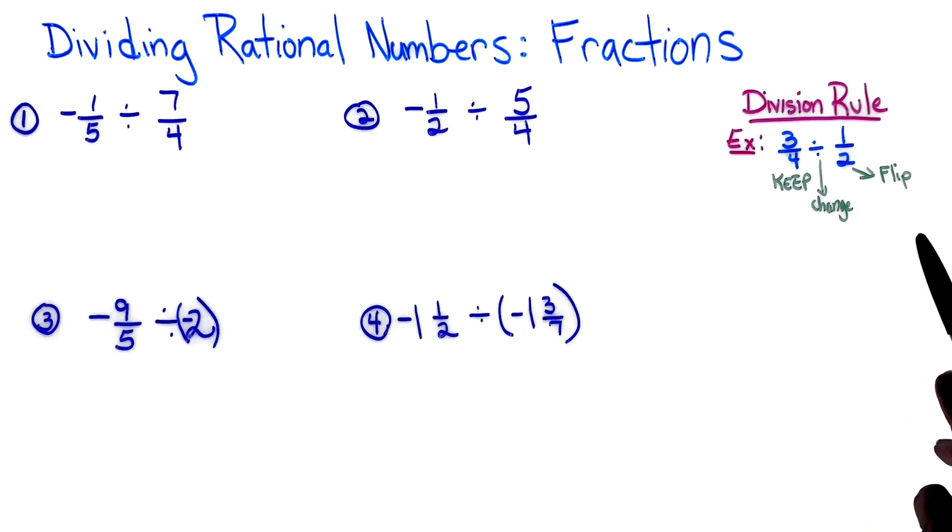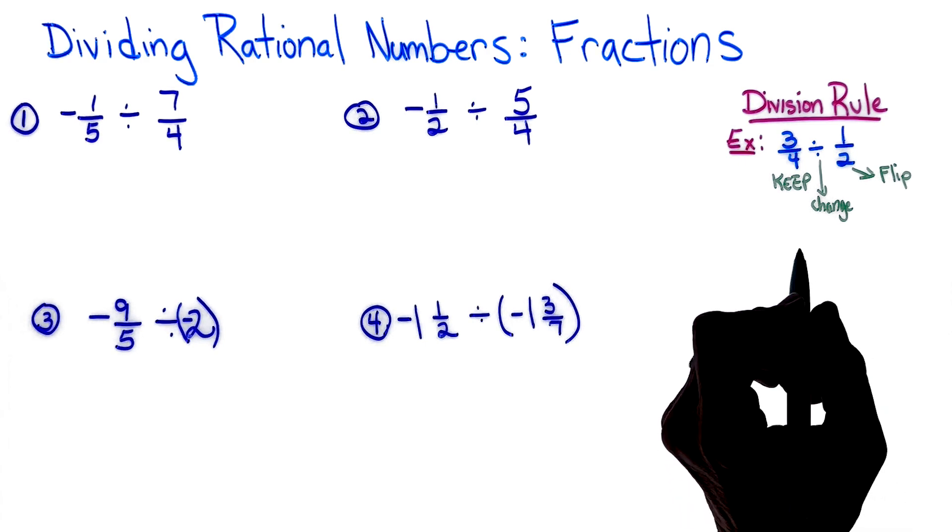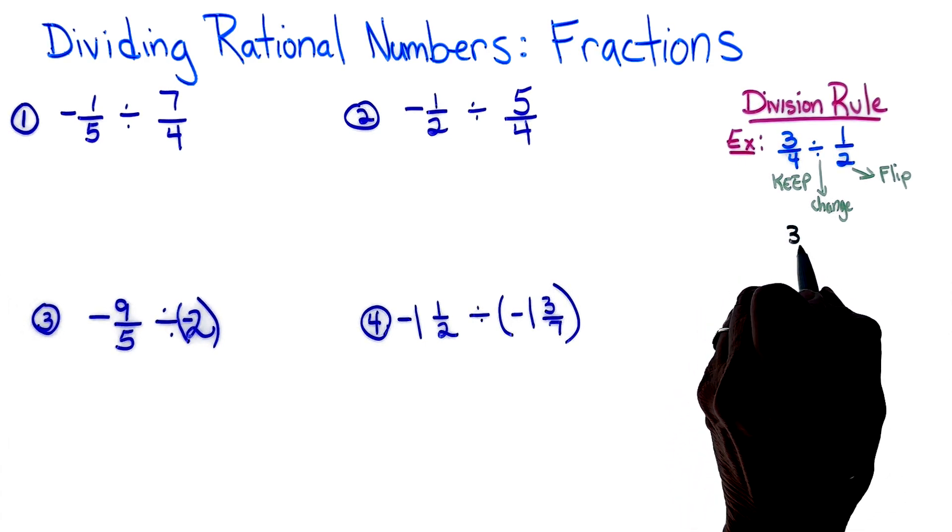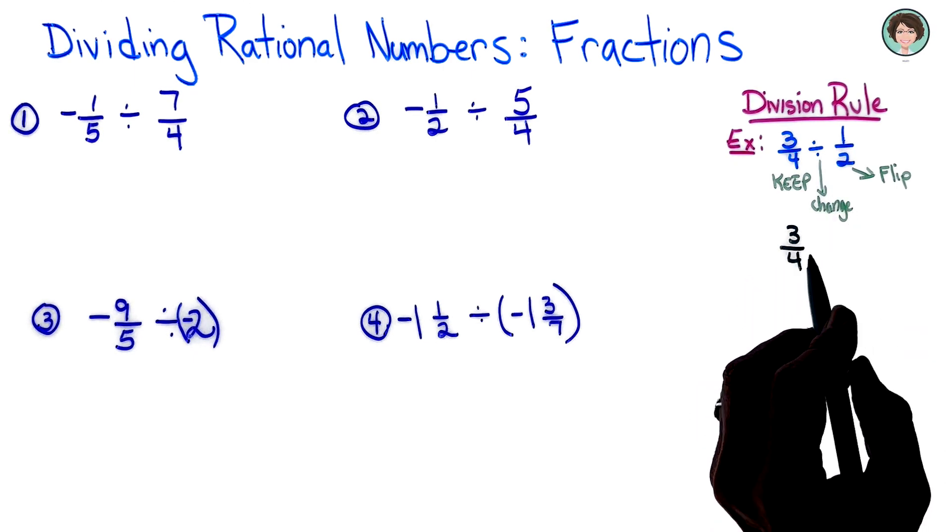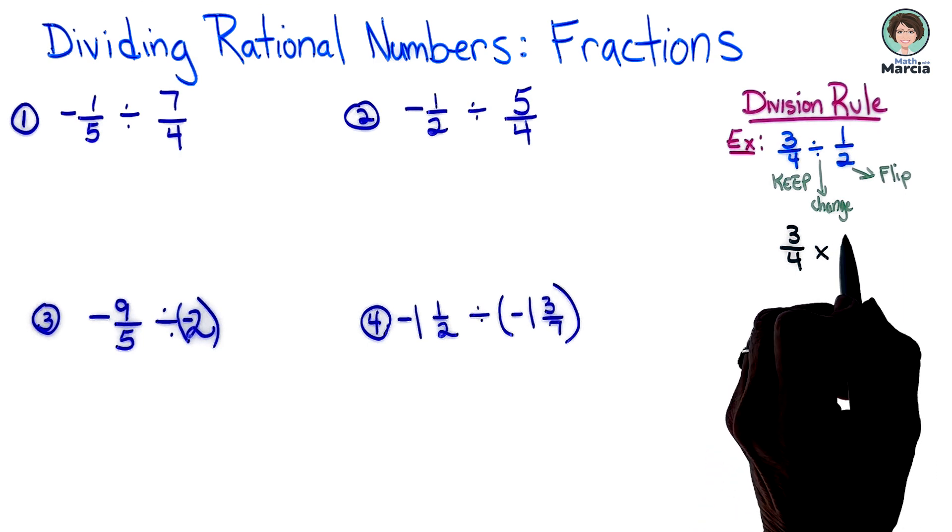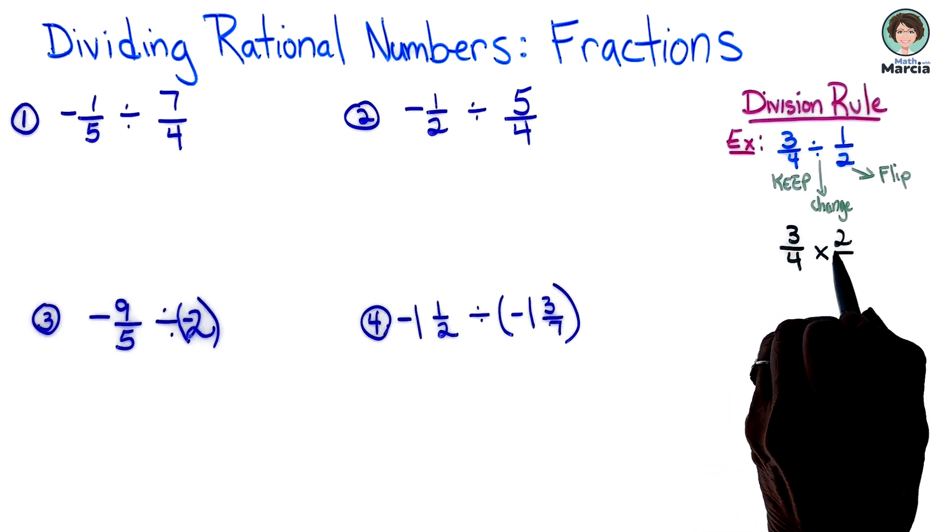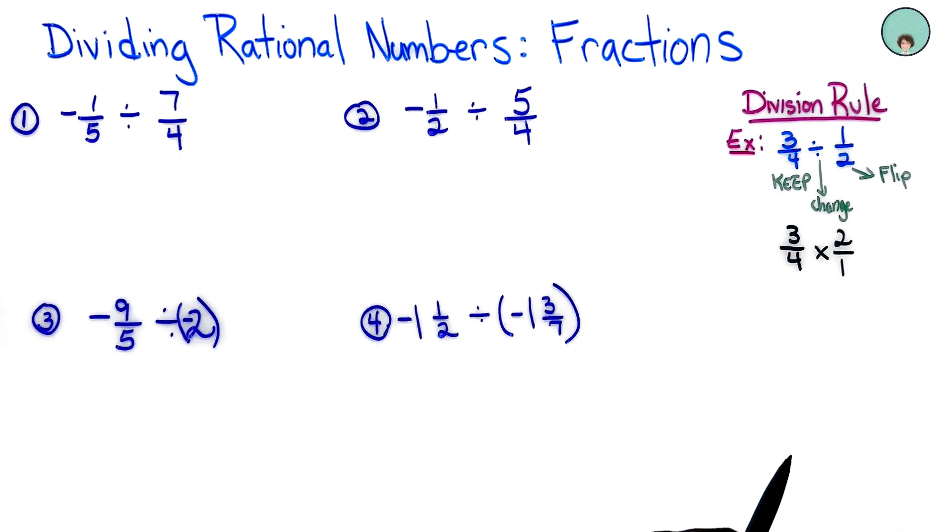Before we start dividing, let's look at this rule that we must remember. Our division rule: if you have 3/4 divided by 1/2, before we can work a division problem we must rewrite it as a multiplication problem. So you keep the first number, you change the division sign to a multiplication sign, and you write the reciprocal of the second number. So it's keep, change, and flip.